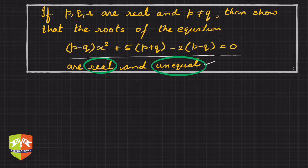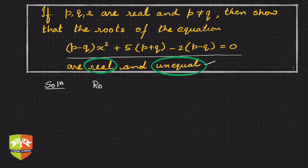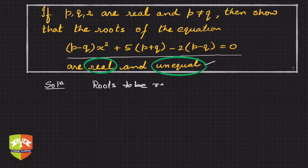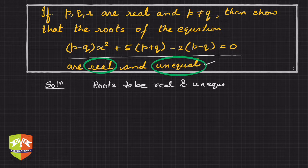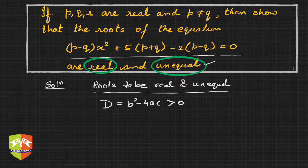So what do we know about this? If the roots have to be real and unequal, then what is the condition? For any quadratic equation, for roots to be real and unequal, the condition is D = b² - 4ac must be greater than 0.